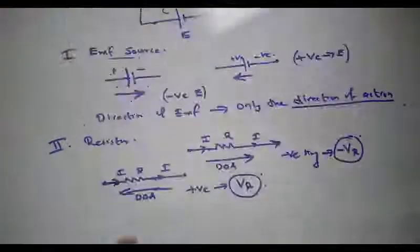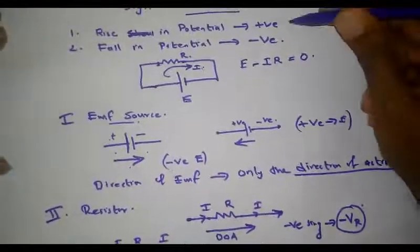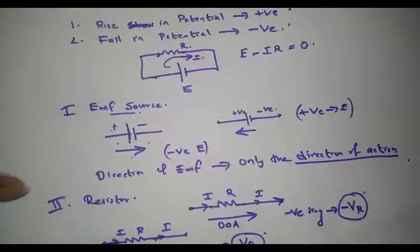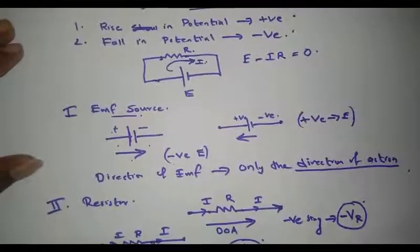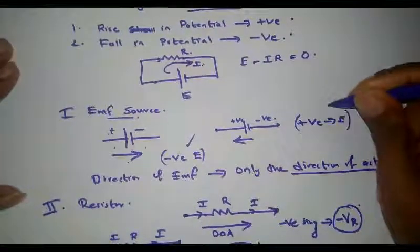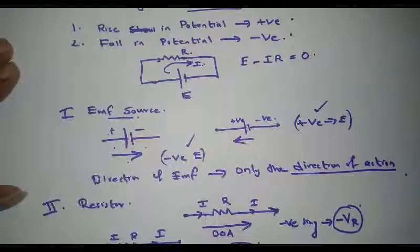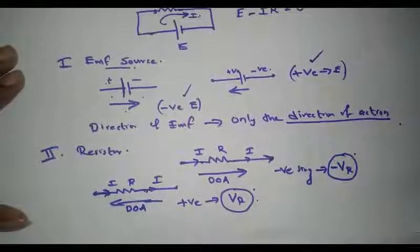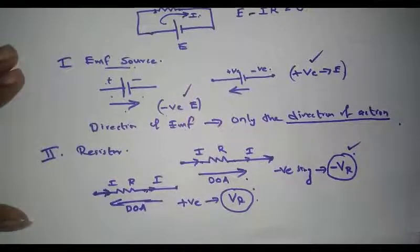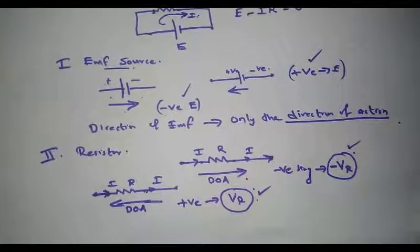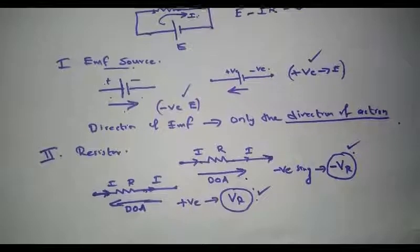In summary: rise in potential should be considered positive and fall in potential should be considered negative. For an EMF source, the sign depends only on the direction of action. Moving from positive to negative gives a fall in potential — assign a negative sign. Moving from negative to positive gives a rise — assign a positive sign. For a resistor, if the direction of action is the same as the direction of current flow, assign a negative sign to the voltage drop. These are the conditions to consider when writing mesh and node equations for solving electrical circuits.